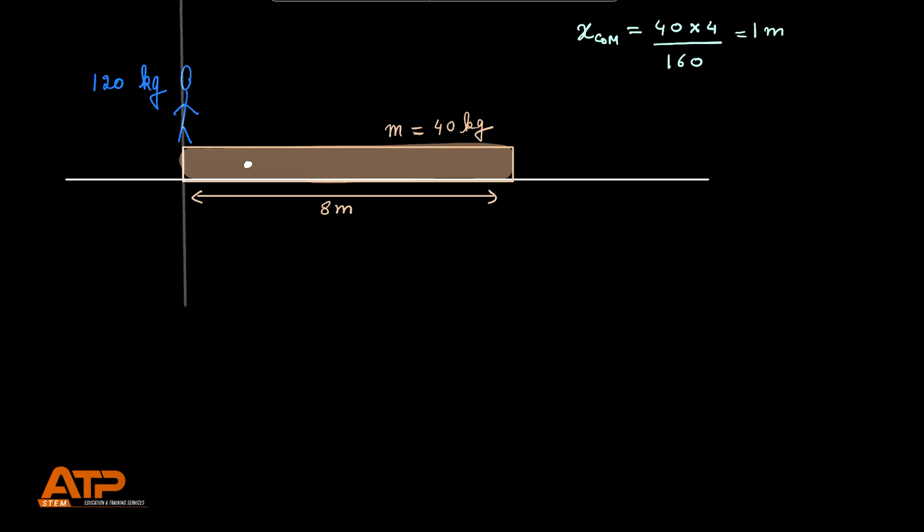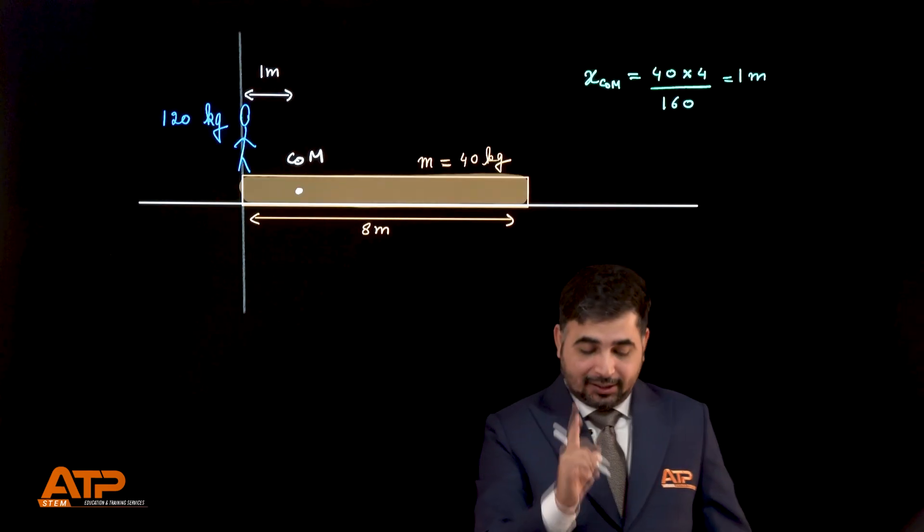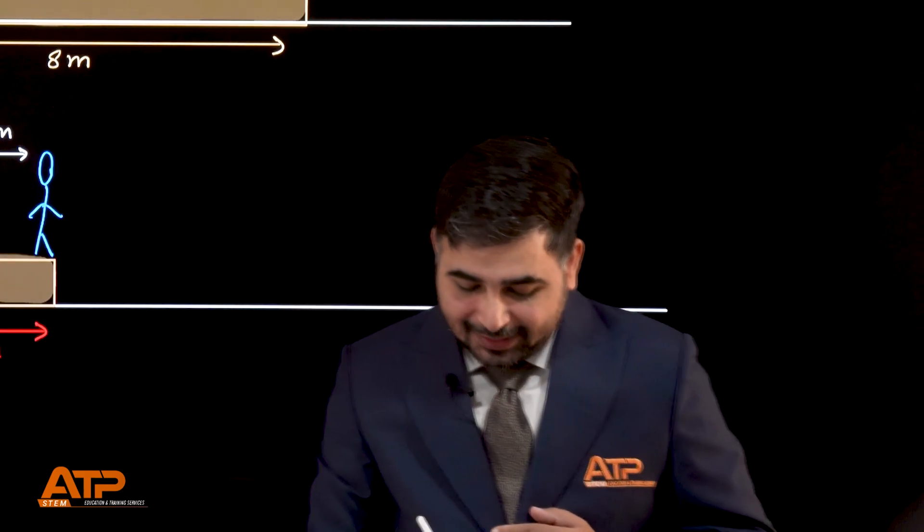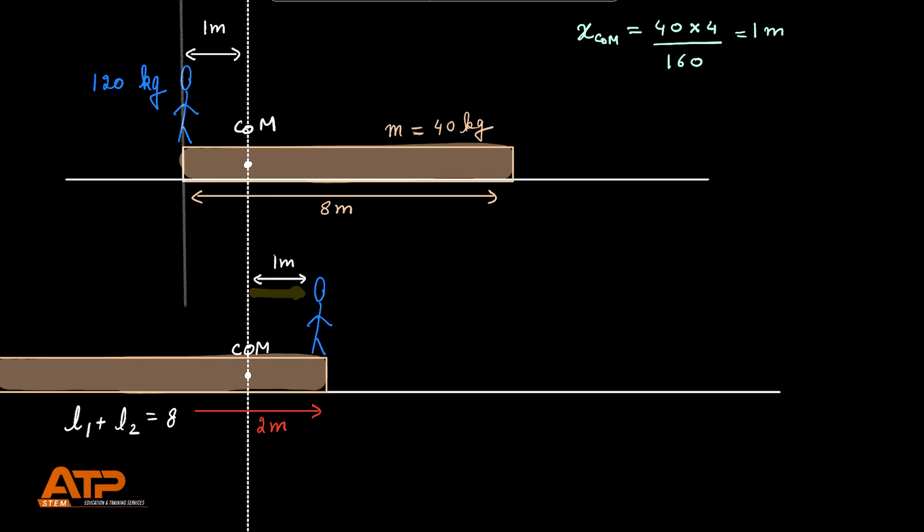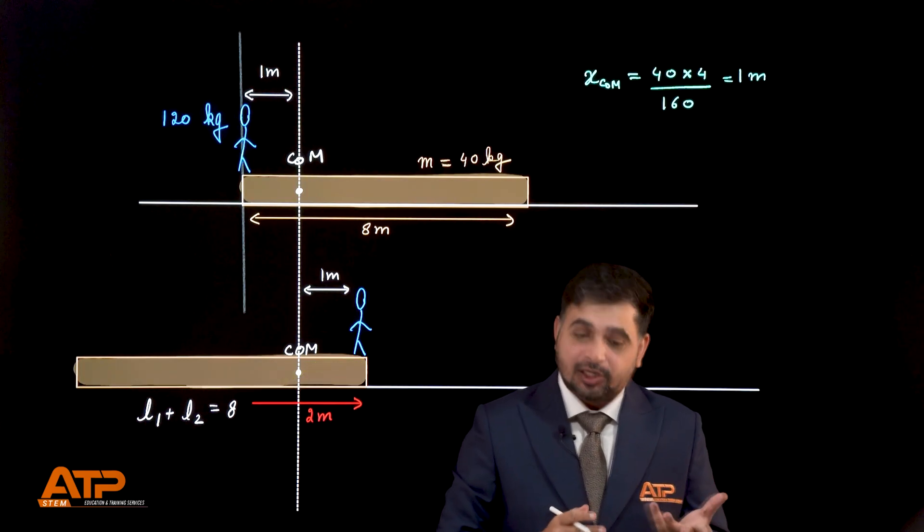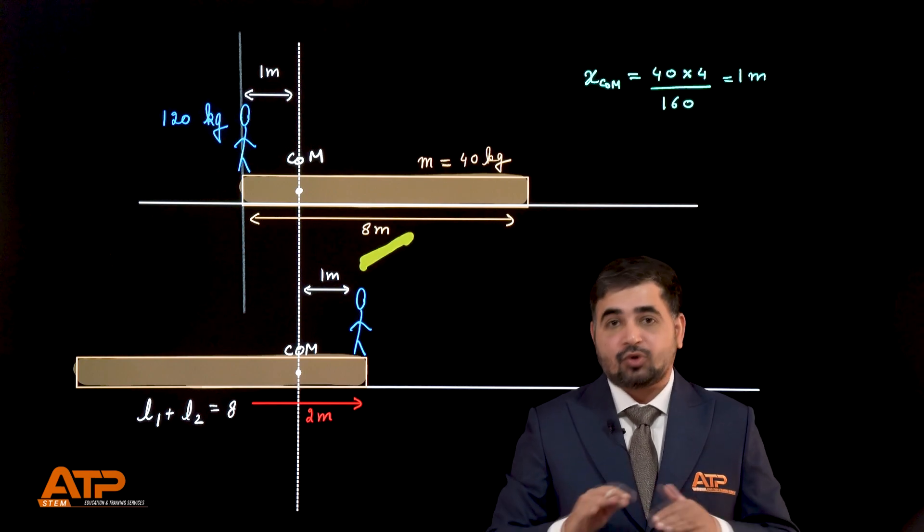Let's see. So, to calculate center of mass, what do we need to do? We need to multiply 40 with 4. Why 4? Because half of the length divided by total mass, 160. That gives us 1 meter. Center of mass is 1 meter away from here. Now, what happens when you visualize the 180 degree rotation? You know the person's going to go to the other side 1 meter. Distance moved is 2 meters. How much is the distance moved by plank? 6 meters because total has to be 8. Question solved.